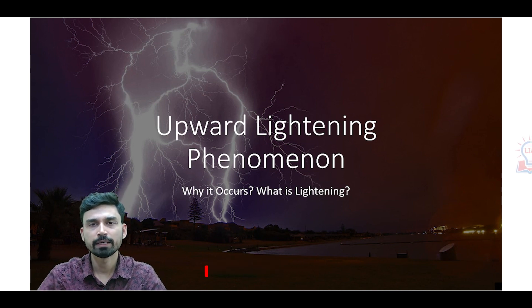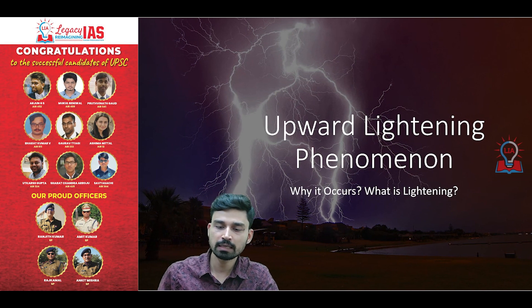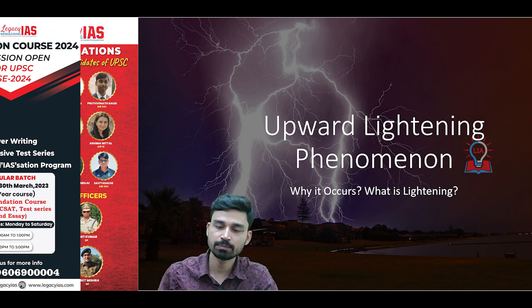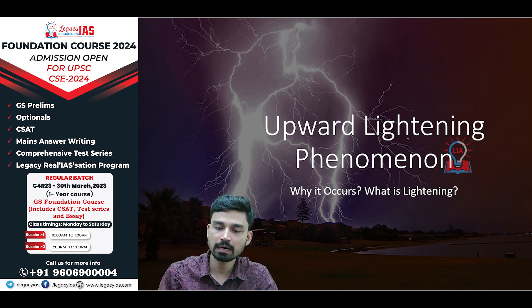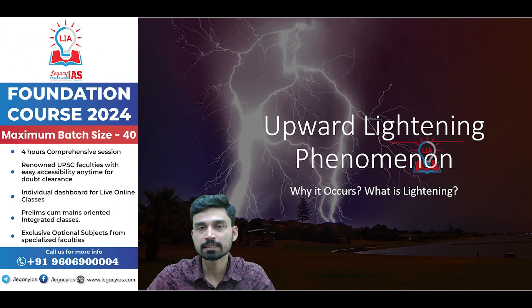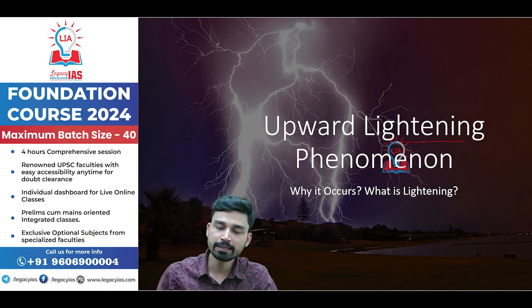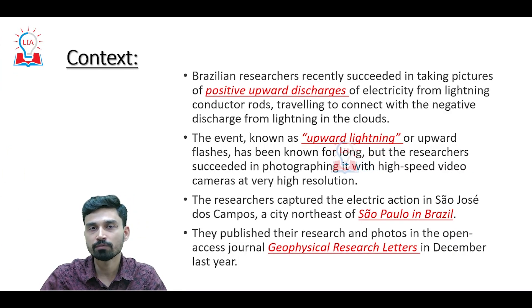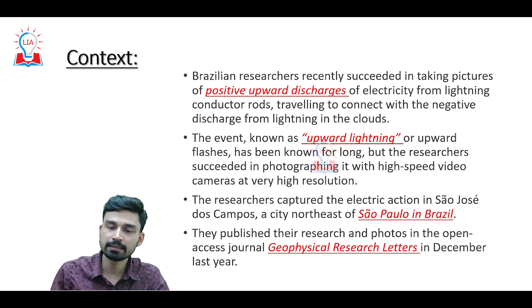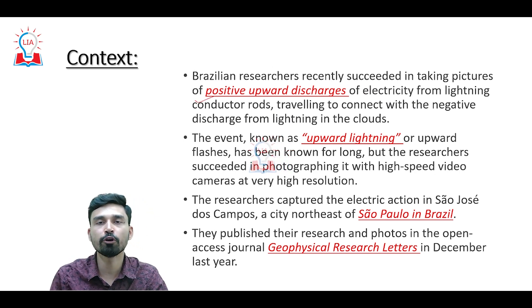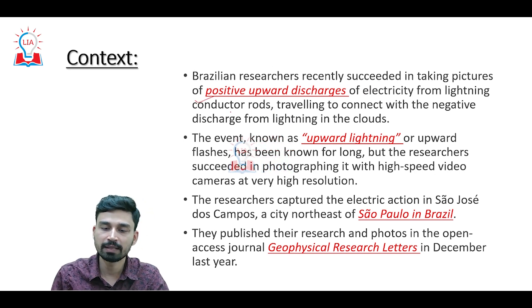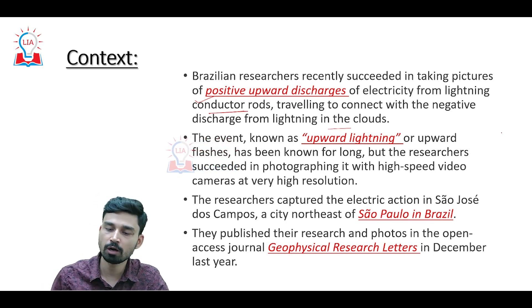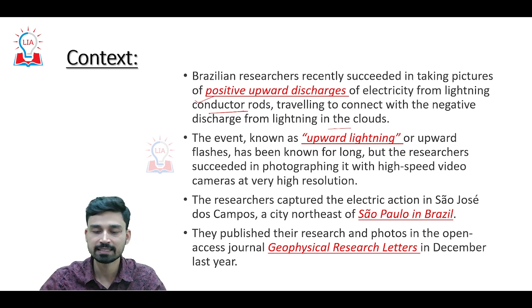Hello students, welcome to Legacy Academy. In this video, we are going to discuss a phenomena that has been researched and used in recent days — that is the upward lightning phenomena. We'll discuss what upward lightning is, what lightning is, why it occurs, and how it occurs. Recently, researchers from the Brazilian institute succeeded in taking pictures of positive upward discharges of electricity from lightning conductor rods traveling to connect to the negative discharge from lightning in the clouds. The phenomena is called upward lightning or upward flashes.